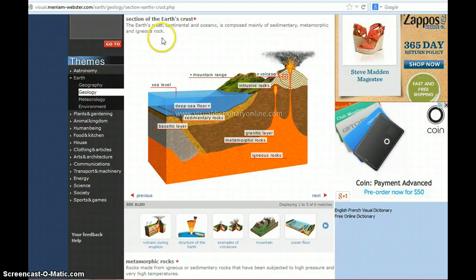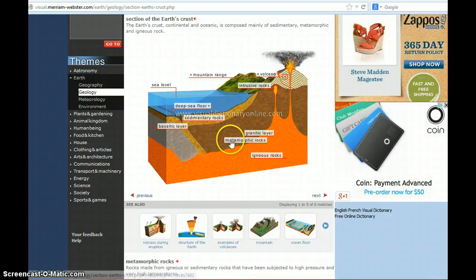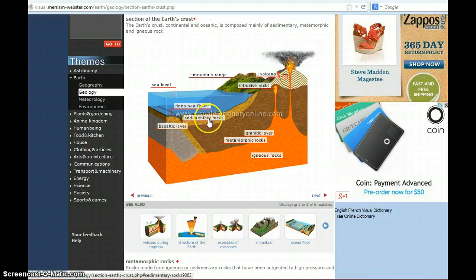So here again, this is just a section of Earth's crust. I was looking up the word metamorphic, and I see metamorphic rocks in my visual. I also see sedimentary rocks and igneous rocks, which are other vocabulary words that we'll want to know.